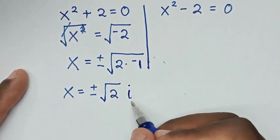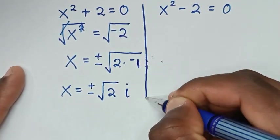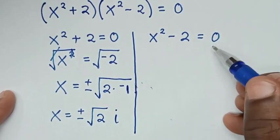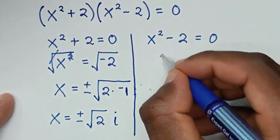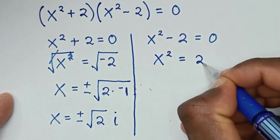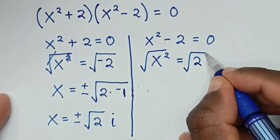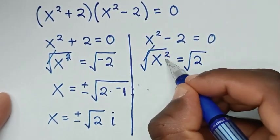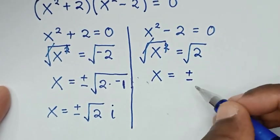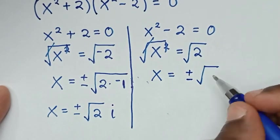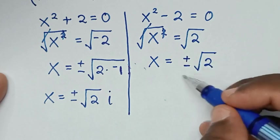From here we have two solutions because of the plus or minus. To solve the second case, we take negative 2 to the right side, so x² = 2. Then we apply square root to both sides — the square root cancels with the square — giving x equals plus or minus square root of 2. So also from here we have two solutions because of the plus or minus.